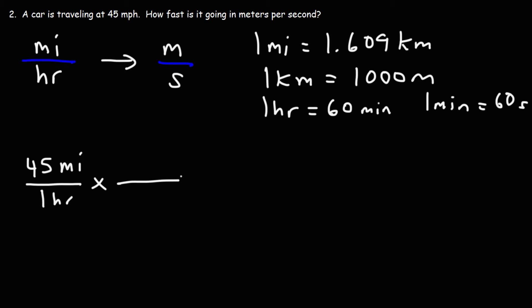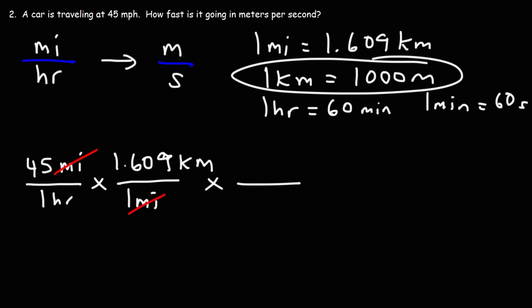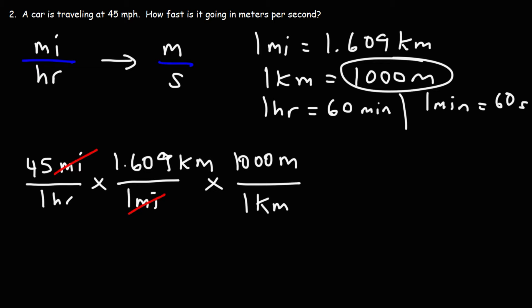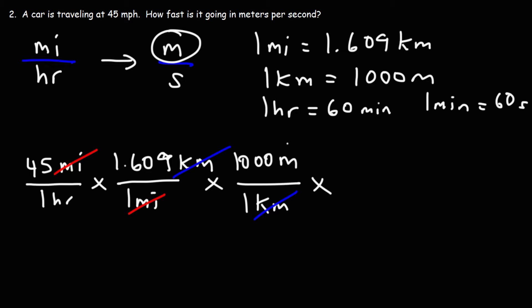We have miles on top, so we put the same unit on the bottom of the next fraction. Miles will cancel. Now let's use the next conversion factor to convert from kilometers to meters. Since we have kilometers on top in the second fraction, we put kilometers on the bottom of the third fraction, and 1,000 meters goes on top. Now we can cross out kilometers, and we have our desired unit, meters.